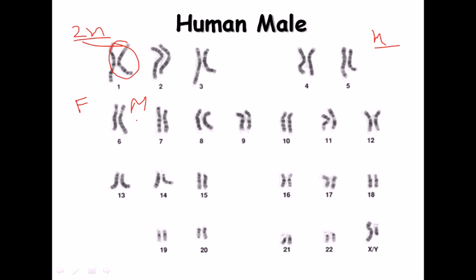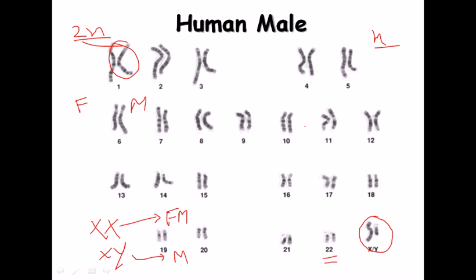In humans, we have 22 pairs of autosomes — the body chromosomes — so 22 into 2 equals 44. We also have one pair of sex chromosomes, which are quite different from the autosomes. This sex chromosome pair — either XY or XX — determines gender. If the pair is XX, the result is a female; if it is XY, the result is a male.